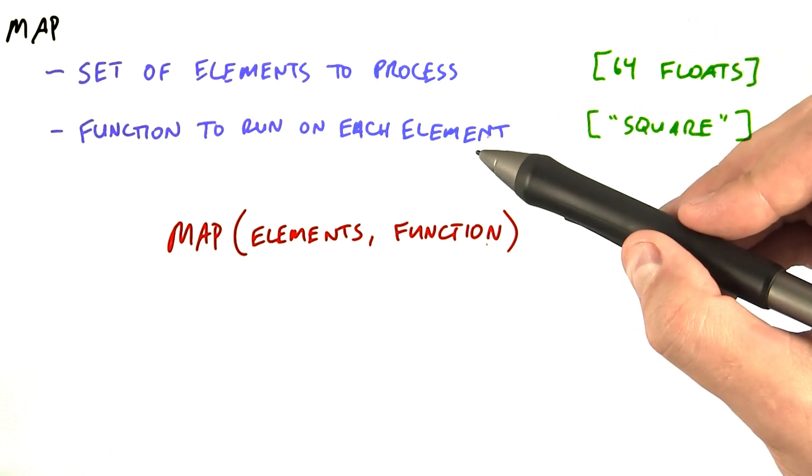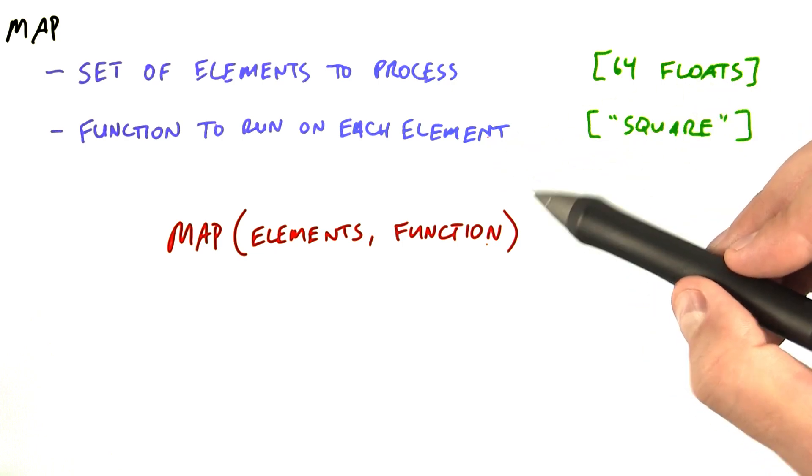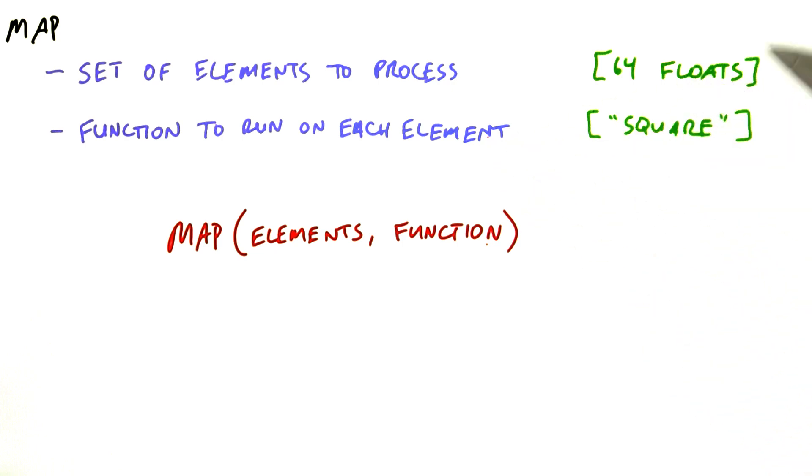Second, we have the ability to write an arbitrary function that runs on one element. In our example, our function squared each of its input elements, producing an output element.